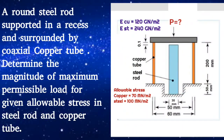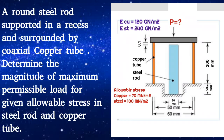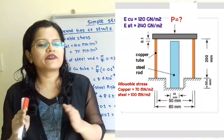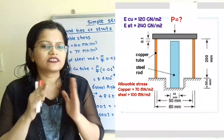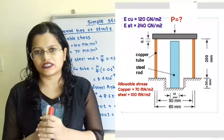Given question: a round steel rod supported in braces and surrounded by a coaxial copper tube. Determine the magnitude of the maximum permissible load for the given allowable stresses for the steel rod and copper tube. When two different materials are fastened together, it is known as compound ties or struts.